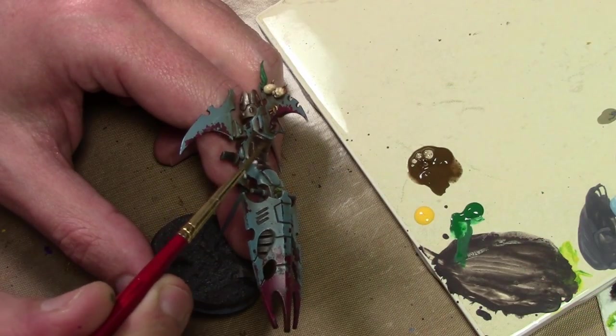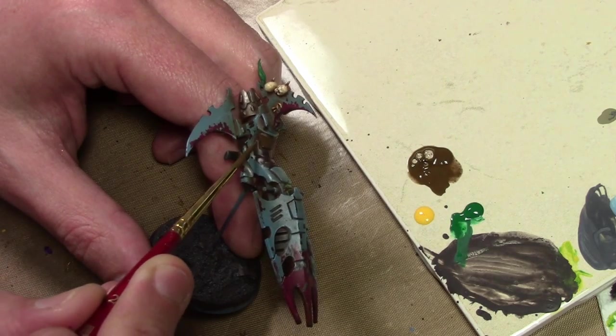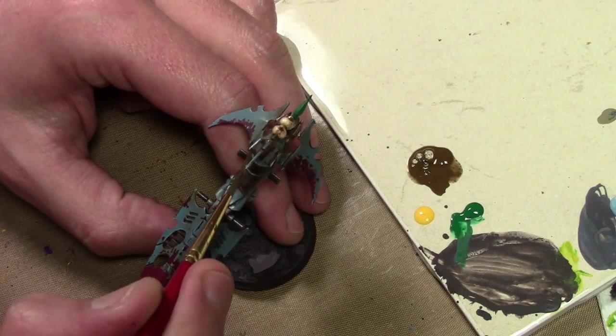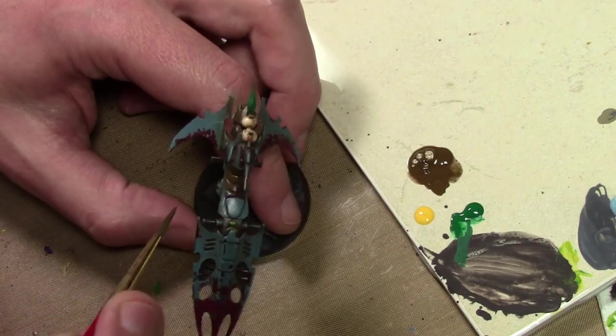I thought that step would be pretty much it and the bike would be done. However, I decided to go back and repaint all the non-blue bits on the model. The seat and the skulls and the control panel and all that stuff.